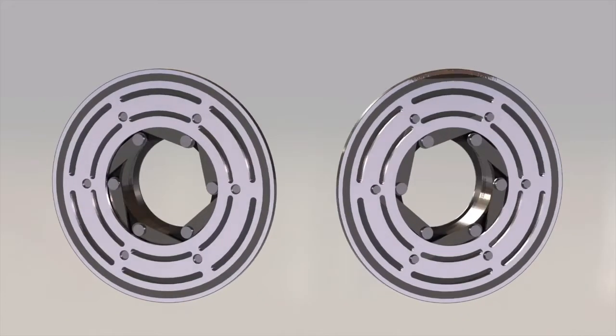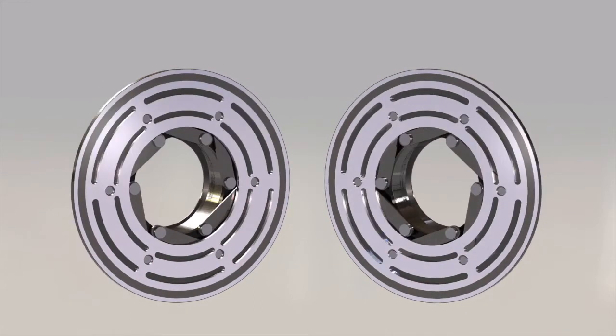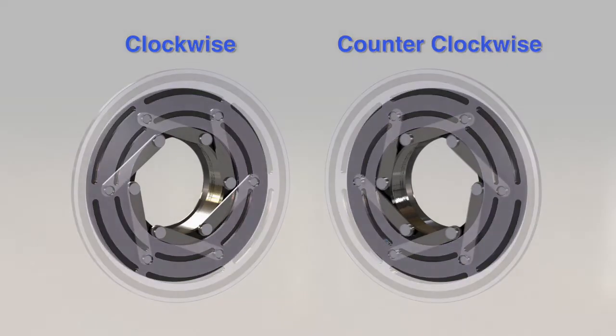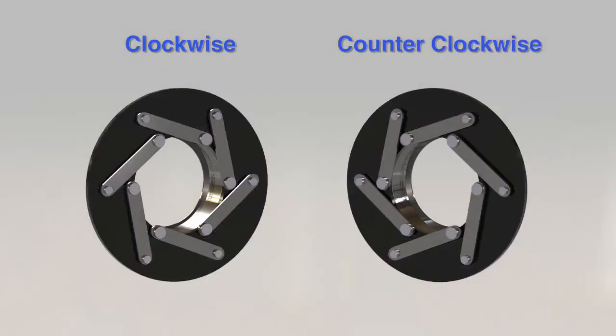All general purpose clutches use leaf springs to transmit the torque. The springs need to run in tension, not compression, so clutches are either built to run clockwise or counterclockwise.